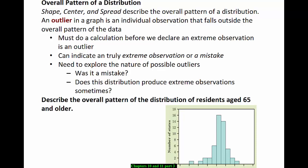Let's use our knowledge so far to describe the overall pattern of the distribution of residents age 65 and older. Notice that the histogram has the percent of residents age 65 and over on the horizontal axis, the number of states with those percents on the vertical axis.